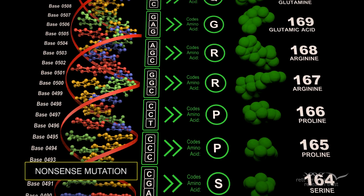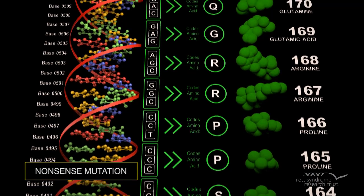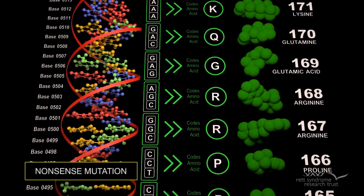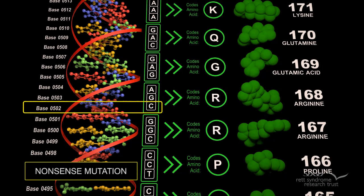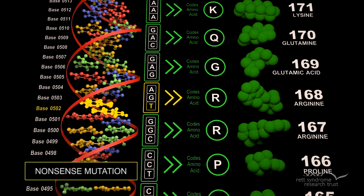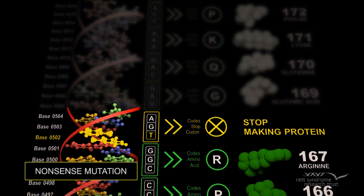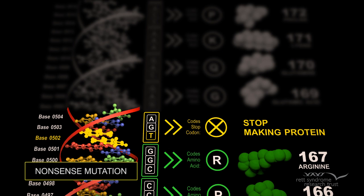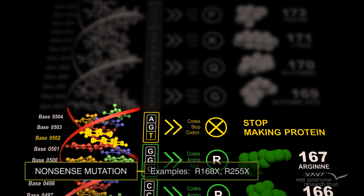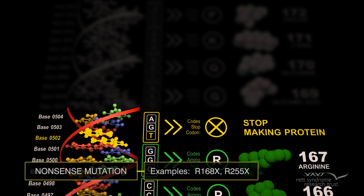Nonsense mutation: a nonsense mutation is also a change in one DNA base pair. Instead of substituting one amino acid for another, the altered DNA sequence prematurely signals the cell to stop building a protein. This type of mutation results in a shortened protein that will function improperly or not at all. The X denotes a mutation that results in a prematurely truncated protein.